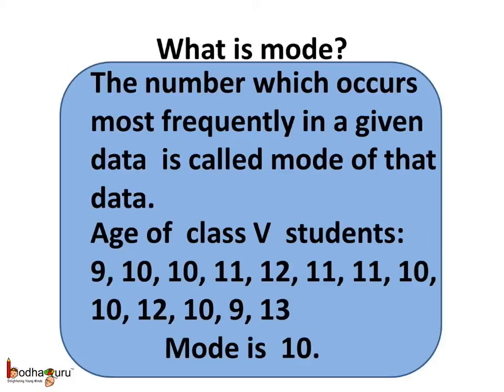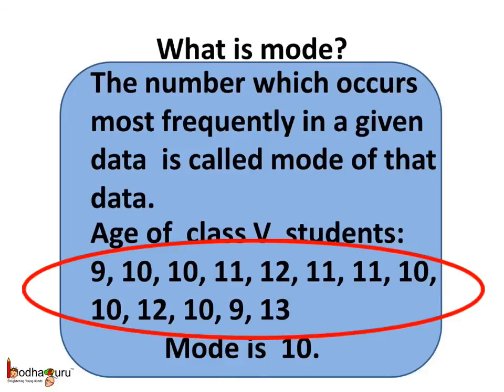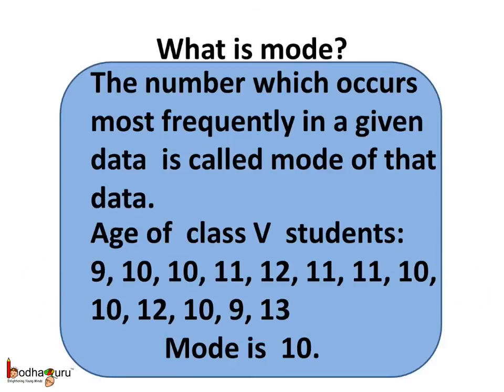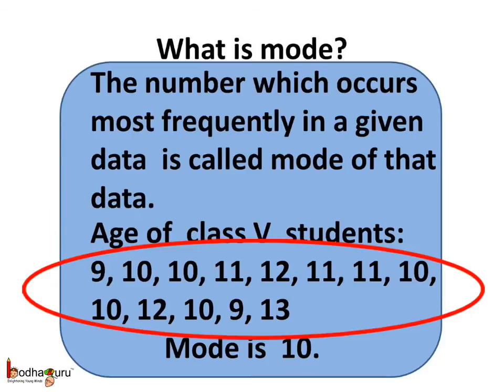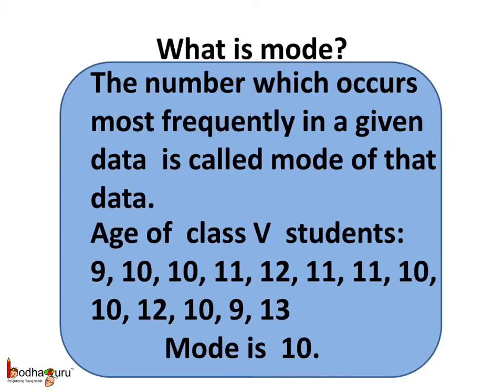For example, this data represents the ages of class 5 students: 9, 10, 10, 11, 12, 11, 11, 10, 10, 12, 10, 9, 13. The most frequently occurring age of a class 5 student is 10. Hence, the mode is 10 here.